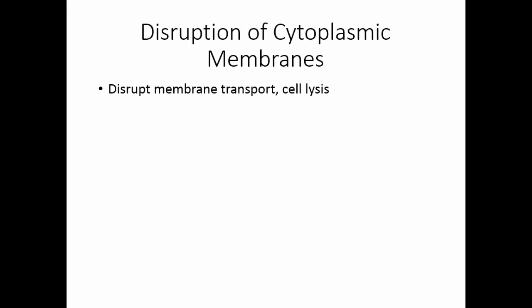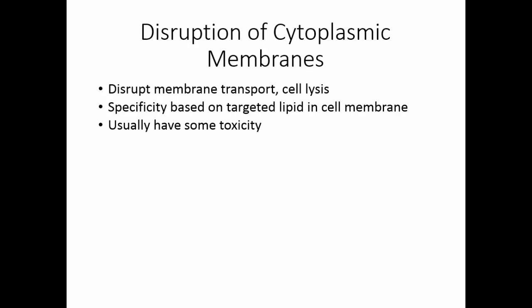When we disrupt the cytoplasmic membrane, we disrupt membrane transport and typically cause cell lysis. In order to do this, we have to specifically target a lipid in the cell membrane, though usually this has some toxicity for our cells as well as for the cells we're trying to kill.